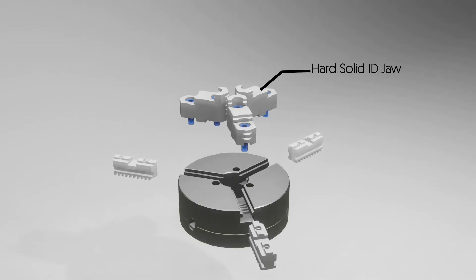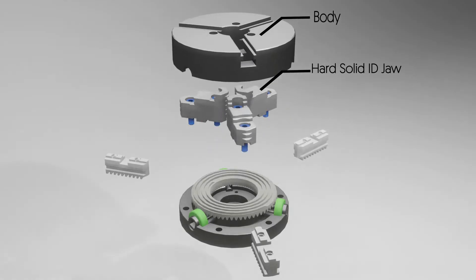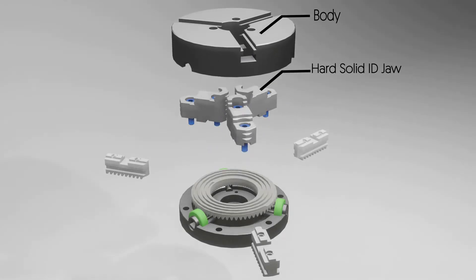Body: it is a solid casing which contains grooves to give horizontal guidance to the hard solid ID jaw.